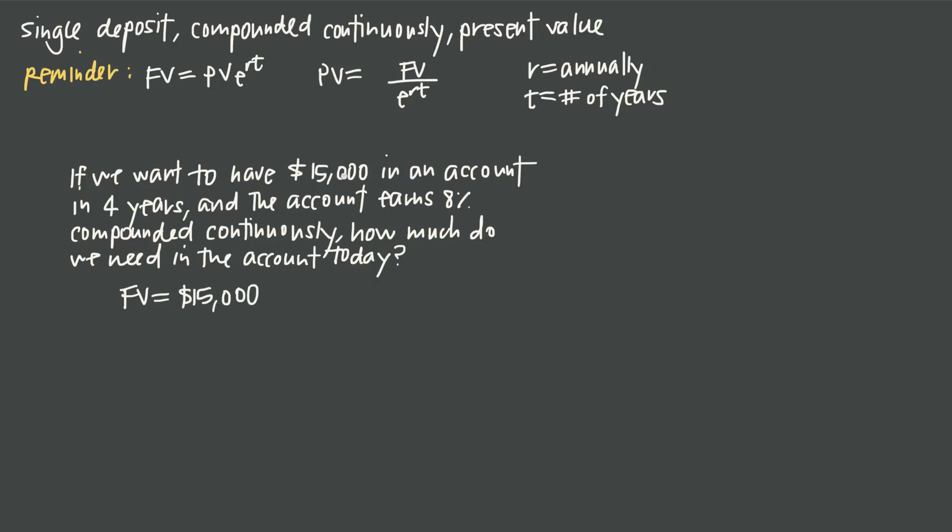We also know that t is going to be four years. We know that the account earns 8% interest so our interest rate r is going to be 8% and we need to convert that percentage rate to a decimal.